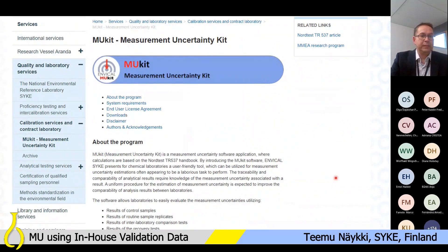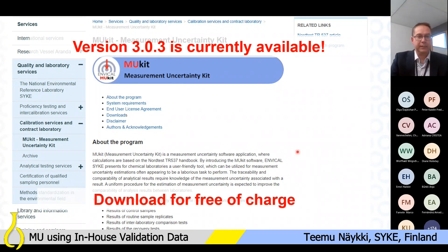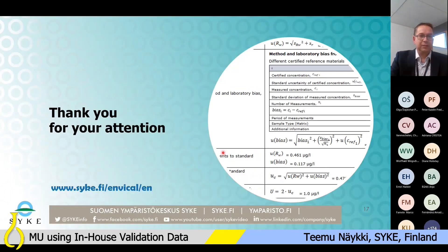The Muget software is available at our website — version 3.0.3 is currently available and it is free of charge. You can download it there, and you can see the website address at the bottom of the page. Thank you for your attention, and I'm happy to answer any questions.